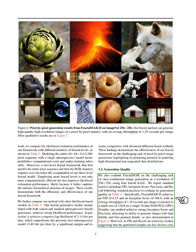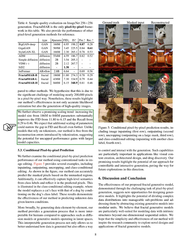For class-conditional image generation at 256-by-256 resolution, we report standard metrics such as FID, inception score, precision, and recall. Our fractal MAR achieves an FID of 6.15 and an inception score of 348.9, with an average throughput of 1.29 seconds per image. While our method shows strong inception score and precision indicating high fidelity and detail, its FID and recall are relatively lower, suggesting less diversity in generated samples. We believe this is due to the complexity of modeling nearly 200,000 pixels individually. We also observe a positive trend in scaling: increasing the model size from 186 million to 848 million parameters significantly improves FID and recall. Unlike models that depend on tokenizers, our method avoids reconstruction errors from tokenization, indicating potential for even greater performance gains with larger models.